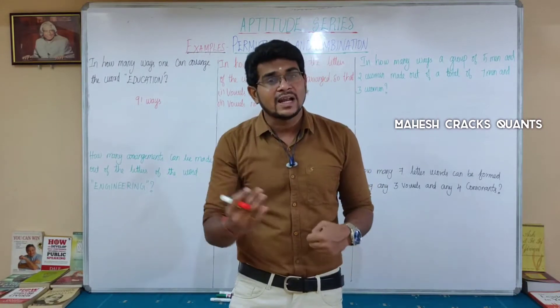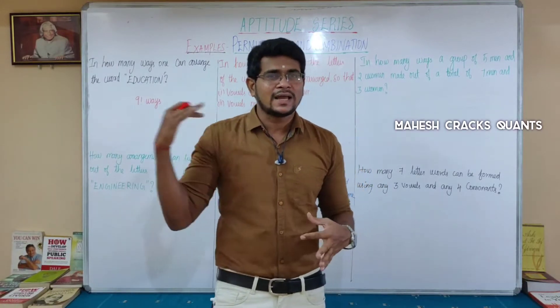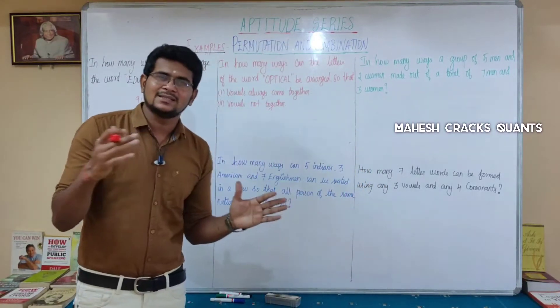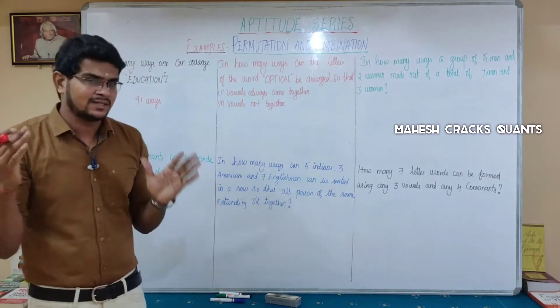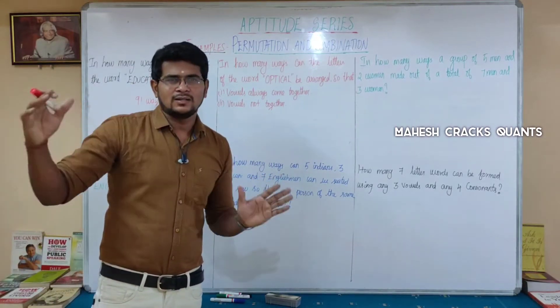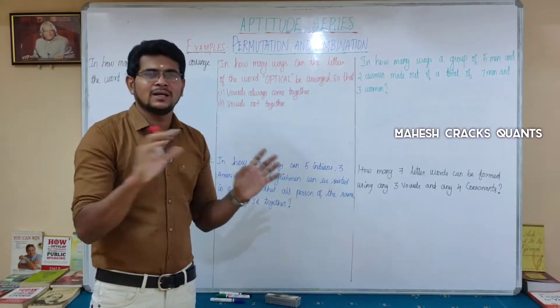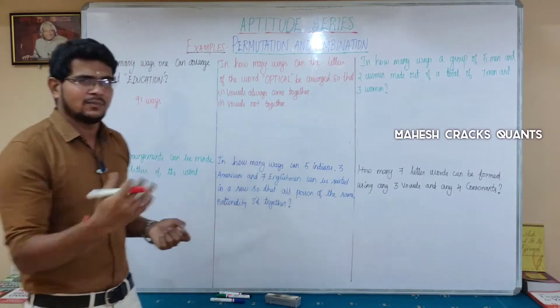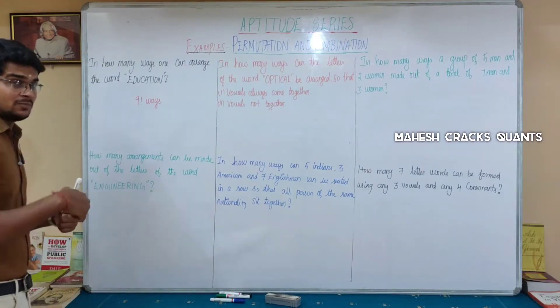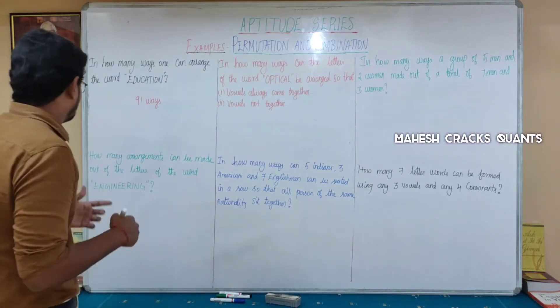If you want the numeric value, expand 9-factorial: 9 × 8 × 7 × ... × 1. That will be multiplied to give the answer. Okay, next question.